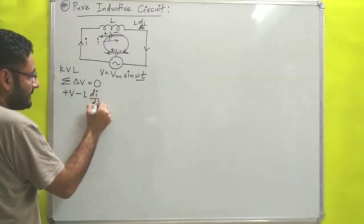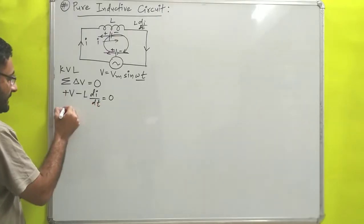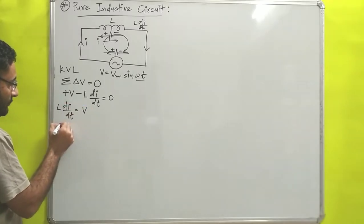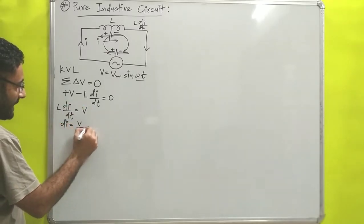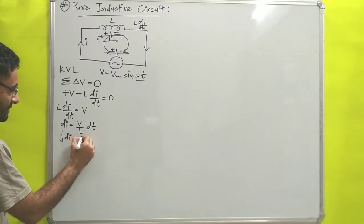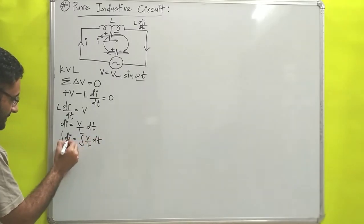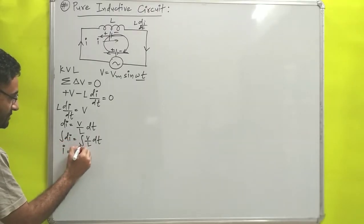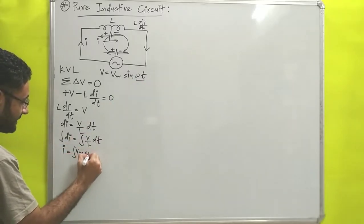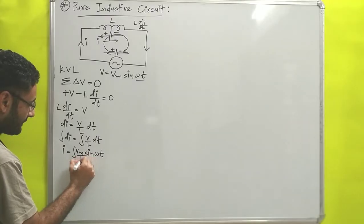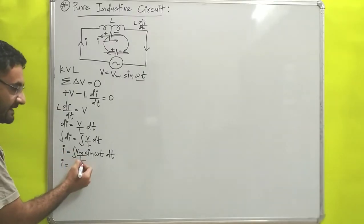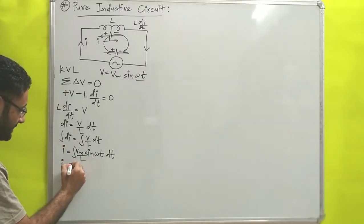Applying KVL: V minus L dI/dt equals 0, which gives L dI/dt equals V. We can rewrite this as dI equals V/L dt. Taking the integration on both sides: the integral of dI equals I, and V is Vm sin(omega t). Substituting, we get I equals the integral of Vm sin(omega t) divided by L dt. Since Vm and L are constants, we take them outside the integration: I equals Vm/L times the integral of sin(omega t) dt.